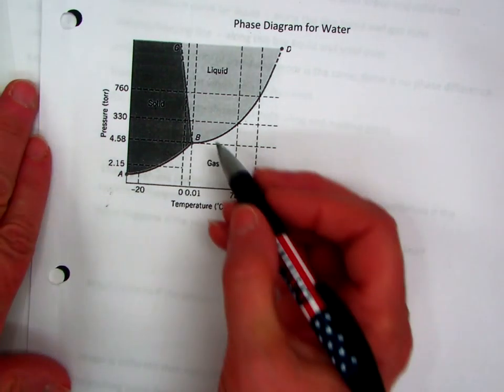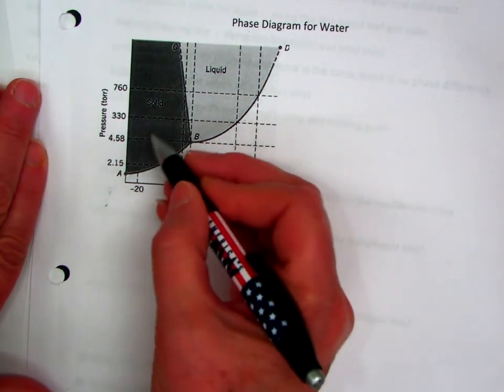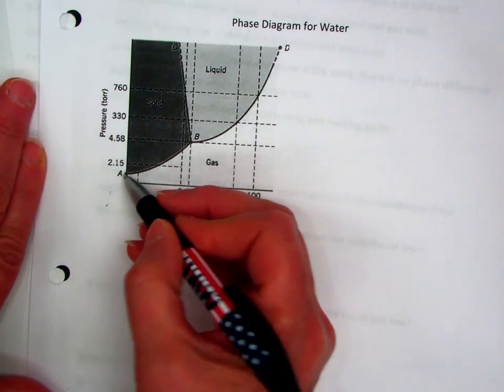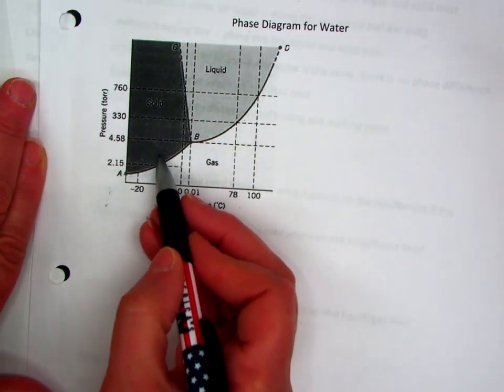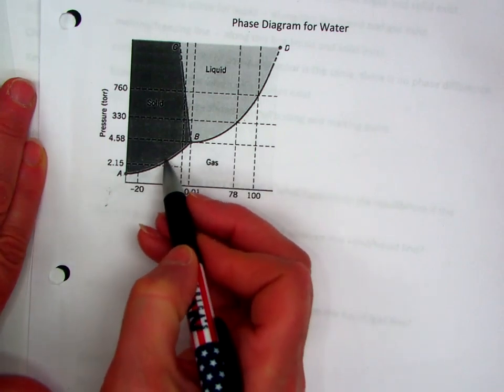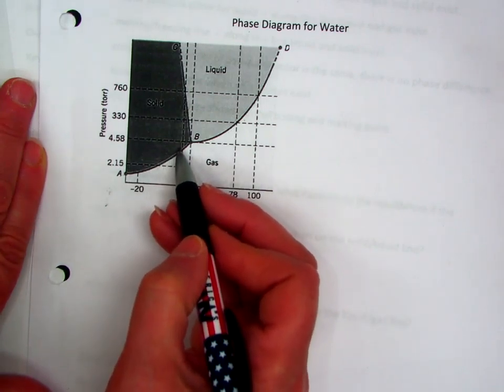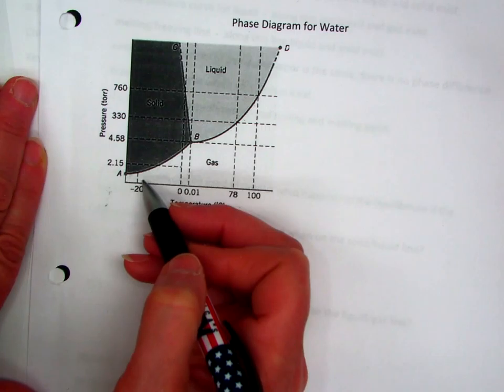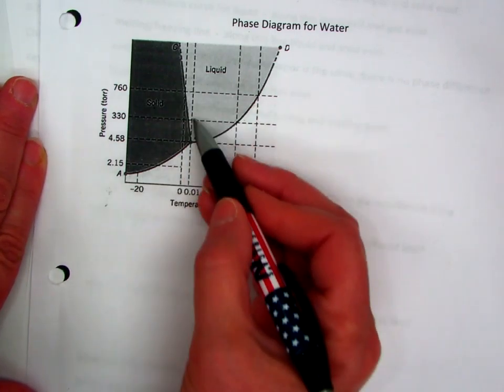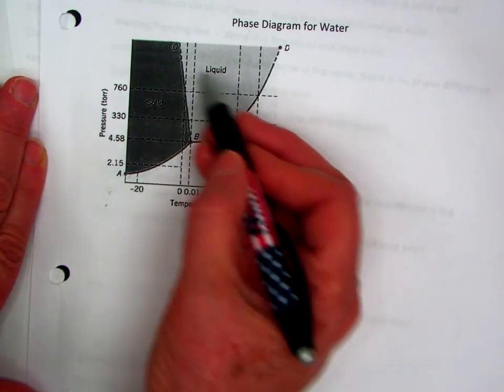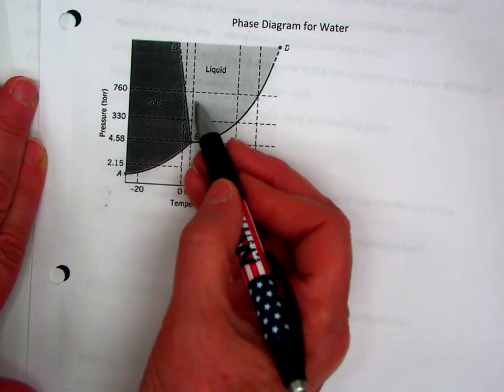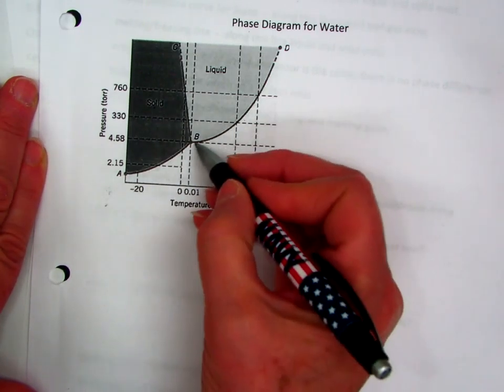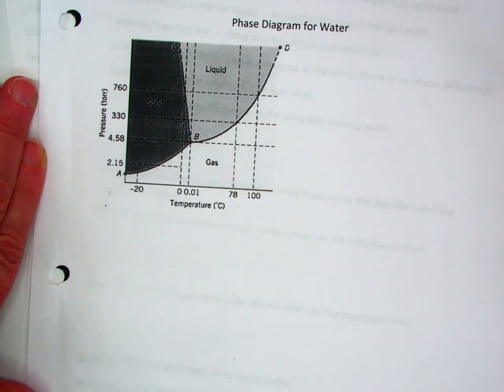So, now, if we look at this, here, if we look in the solid area, we have this line from A to B. And that is the equilibrium line between solid and gas. So, if I'm sitting on this line, I have solid and gas in a sublimation equilibrium. If I'm sitting on this line from solid to liquid, right here from B to C, I'm on the melting freezing line. On this line, liquid to gas, I'm on the evaporation condensation line.